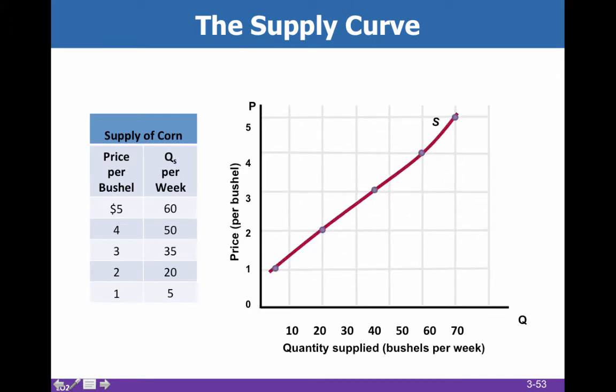What you see now is a schedule where at different prices, suppliers are willing to supply different amounts. So if I can get $5 per bushel, then I'm going to sell a lot more bushels per week than if I can just get $1 per bushel. And that's what gives me the upsloping supply curve.